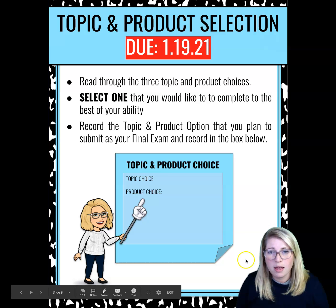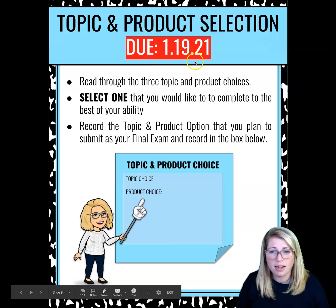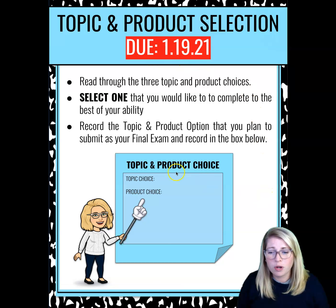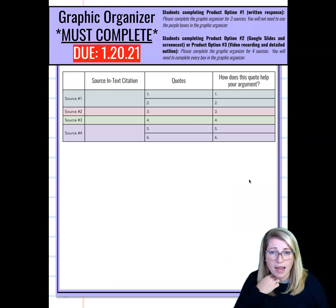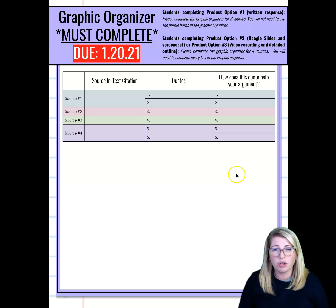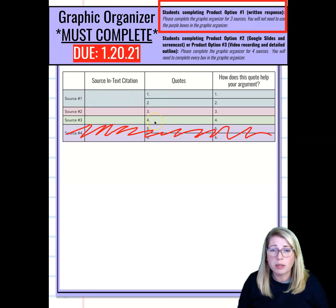Here are your quick checks. Next week you're off for Martin Luther King Day, but on Tuesday we're going to have a live session where you pop in and we'll see what you chose. By Tuesday the 19th you need to have this sheet filled out — for example, you might put that you're going to do the chronology option with the written response. You'll log into the Teams meeting, I'll check you off and let you go. On Wednesday the 20th you need to come to class with your graphic organizer filled out, and for those choosing option three, that's also your outline.